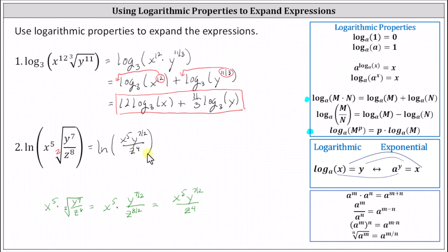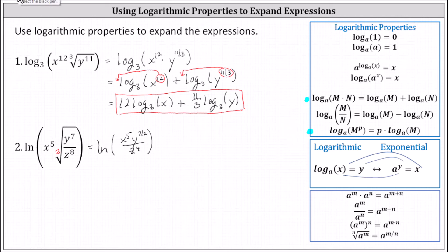And now we'll expand the logarithm in this form. Because we have a quotient, we begin by applying the quotient property of logarithms, which is log base a of the quotient of m and n is equal to log base a of m minus log base a of n. This indicates the given expression can be expanded and written as natural log of the numerator, which is x to the fifth y to the seven halves, minus natural log of the denominator, giving us minus natural log of z to the fourth.